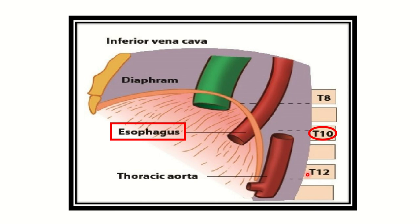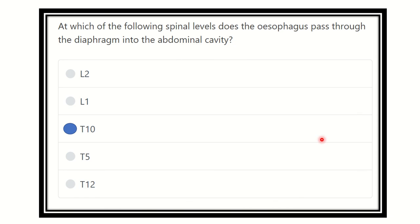These three are the major openings of the diaphragm: the vena cava opening, the esophageal opening, and the aortic opening. The esophagus lies at the vertebral level of T10. So our final answer is Thoracic 10 — the level at which the esophagus passes into the abdominal cavity through the diaphragm. Thank you all.